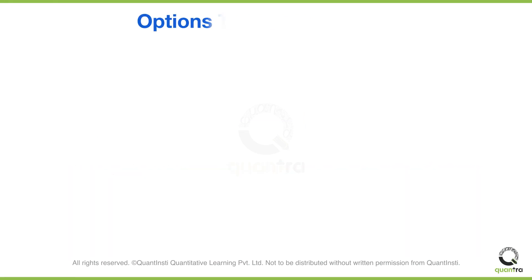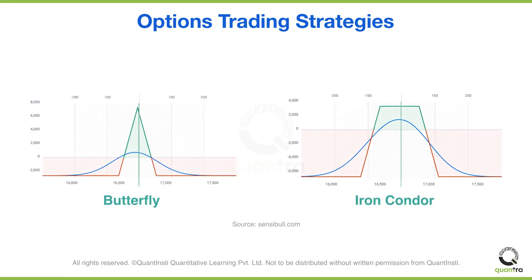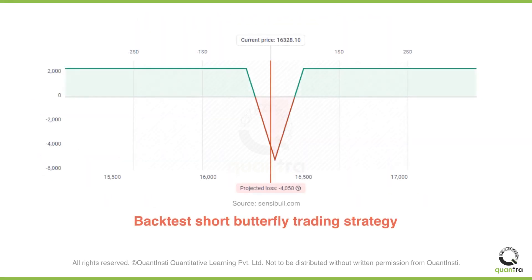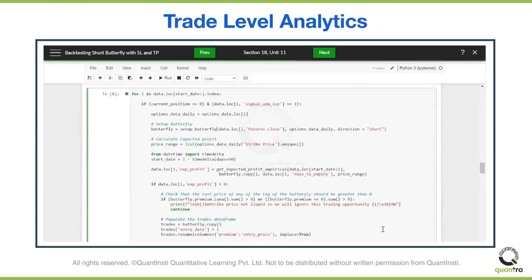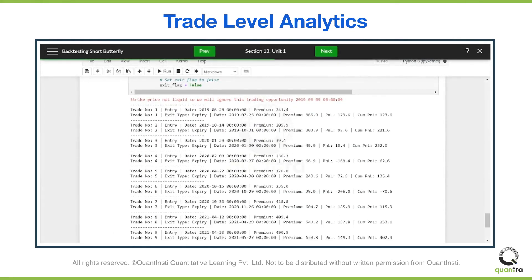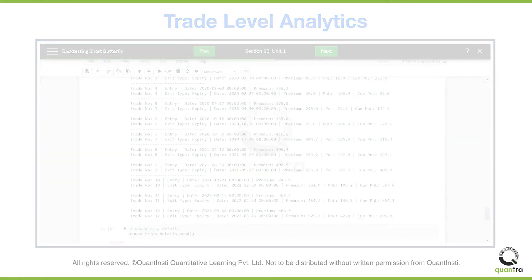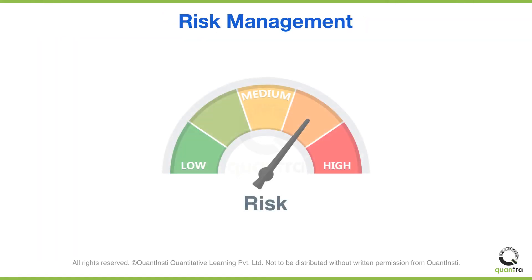You will be introduced to some interesting options trading strategies, including the butterfly strategy and iron condor strategy. Furthermore, you will also learn how to backtest the short butterfly trading strategy. The backtest code in this course can be easily adapted to work for different options trading strategies as well. You'll be able to analyze the trade level details of your strategy and learn how to effectively manage risk in your capital.